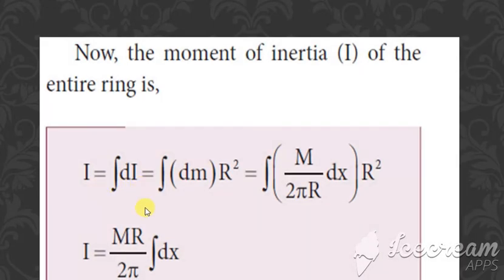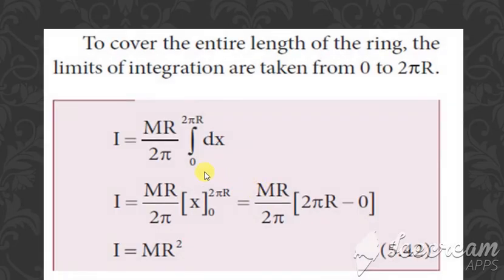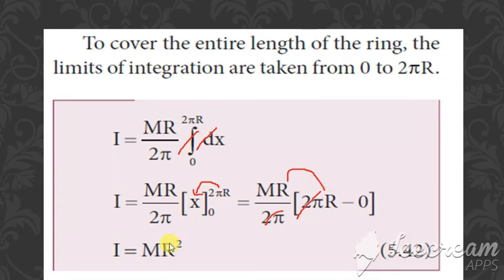I = ∫dI = ∫dm·R². Substituting dm = (M / 2πR)·dx, we get I = ∫(M / 2πR)·dx·R². One factor of R cancels, leaving M, R, and 2π as constants. We integrate dx with limits from 0 to 2πR. The integral of dx gives x, evaluated from 0 to 2πR, which equals 2πR − 0 = 2πR. Then 2π cancels with 2π.